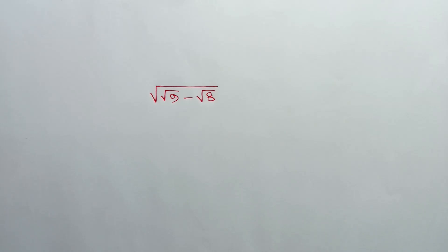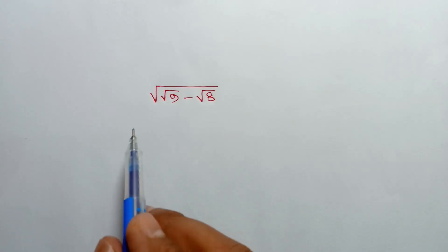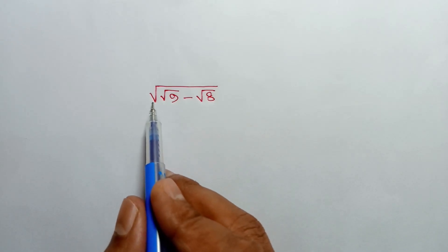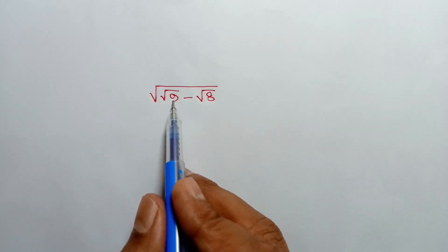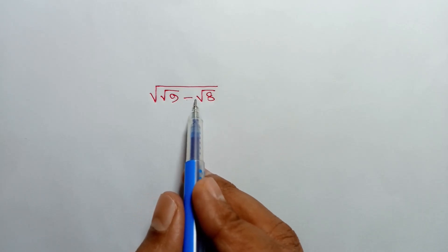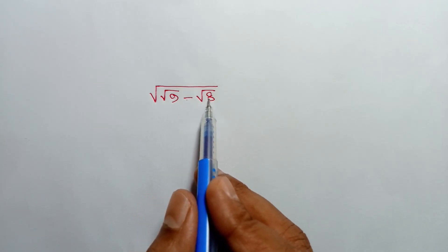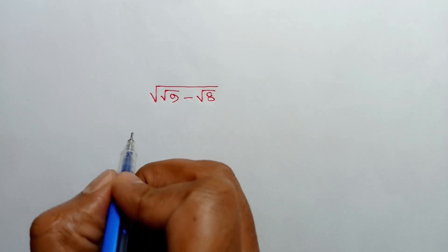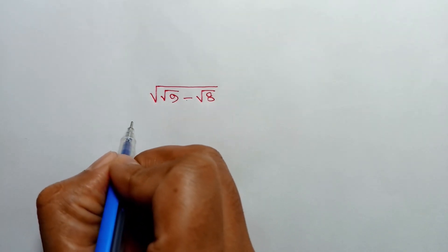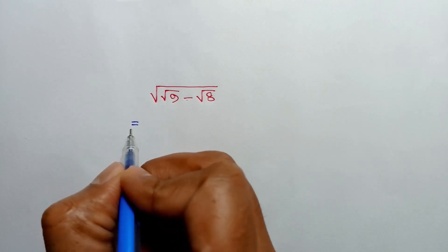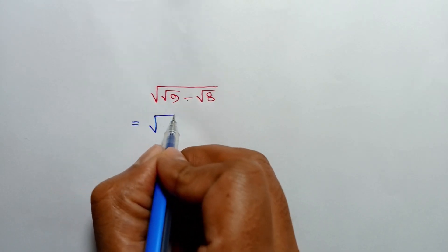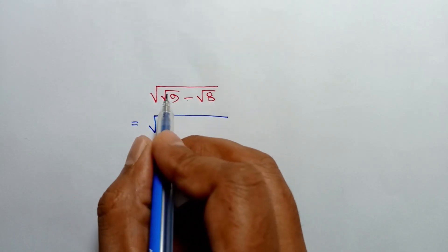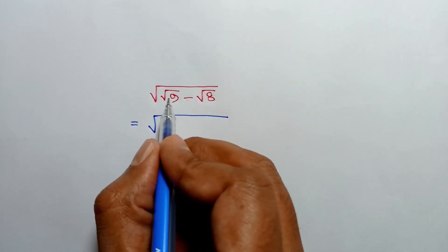Hi everyone. In this video I am going to show how to simplify a square root expression: square root of square root of 9 minus square root of 8.